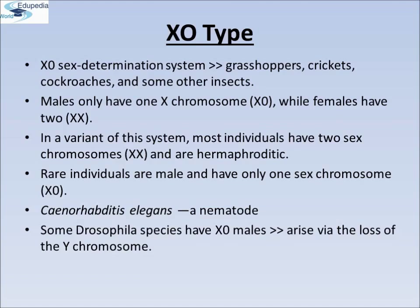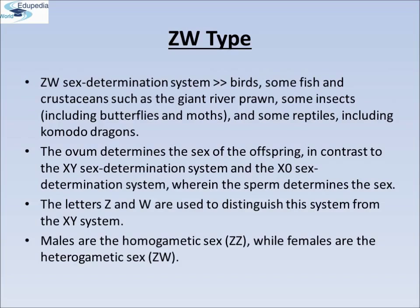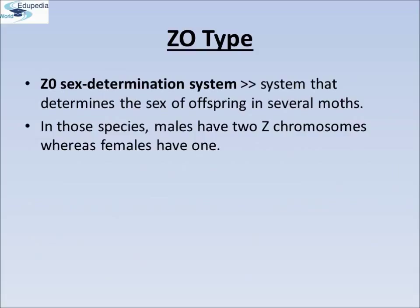ZW Type. The ZW sex determination system determines the sex of offspring in birds, some fish and crustaceans such as the giant river prawn, some insects including butterflies and some moths, and some reptiles including Komodo dragons. In the ZW system, the ovum determines the sex of the offspring, in contrast to the XY or X0 systems where the sperm determines sex. The letters Z and W are used to distinguish this system from the XY system. Males are the homogametic sex ZZ, while females are the heterogametic sex ZW. The Z0 sex determination system determines the sex of offspring in several moths, where males have two Z chromosomes while females have only one, causing the Z0 type.